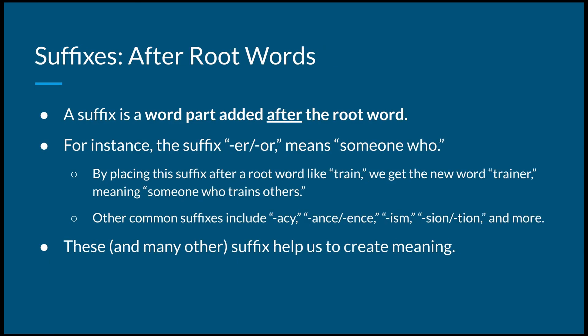Next, we have suffixes, which go after our root words. For instance, an example of a suffix is -er or -or, meaning someone who. By placing the suffix after a root word like train, we get a brand new word — trainer — meaning someone who trains others.